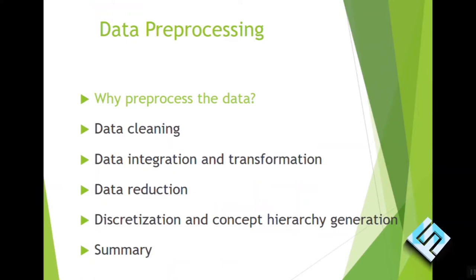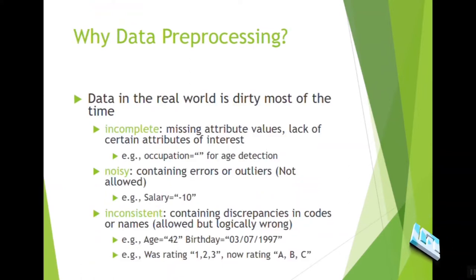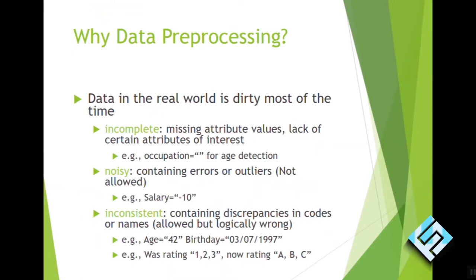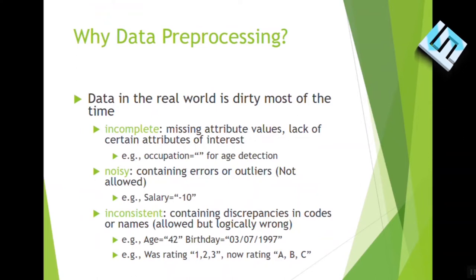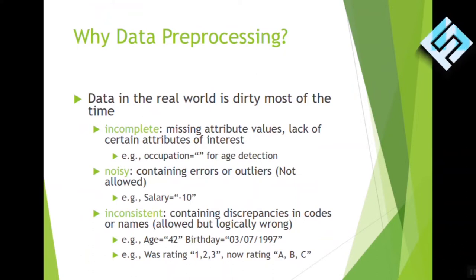First we will know why we need to preprocess the data. What comes from real world data is usually dirty data. Dirty data means that we have missing attributes, sometimes noise and inconsistent behavior. Incomplete attributes means that sometimes when our sensor collected data, a resource or worker used to write it in Excel or any data format or CSV format, then there will be mistakes. Because there are thousands of attributes and thousands of cells to be filled, we have incomplete and missing attributes.